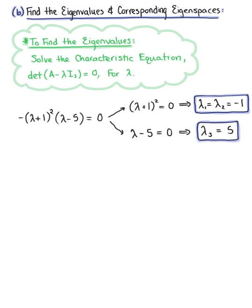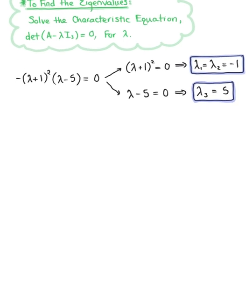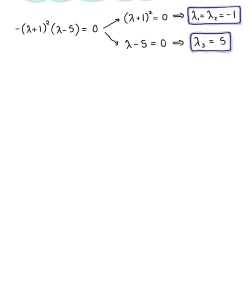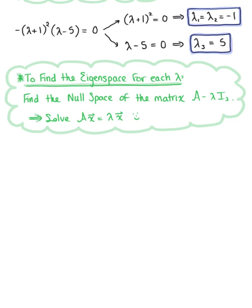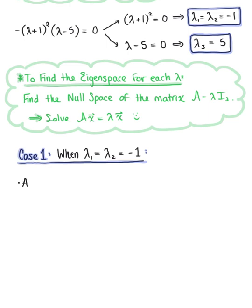To find the eigenspaces corresponding to these eigenvalues, we consider two cases separately. To find an eigenspace for each lambda, we need to find the null space of (A minus lambda times the identity matrix) — in other words, solving the matrix equation A times vector x equals lambda times vector x. Case 1: lambda sub 1 equals lambda sub 2 equals negative 1.